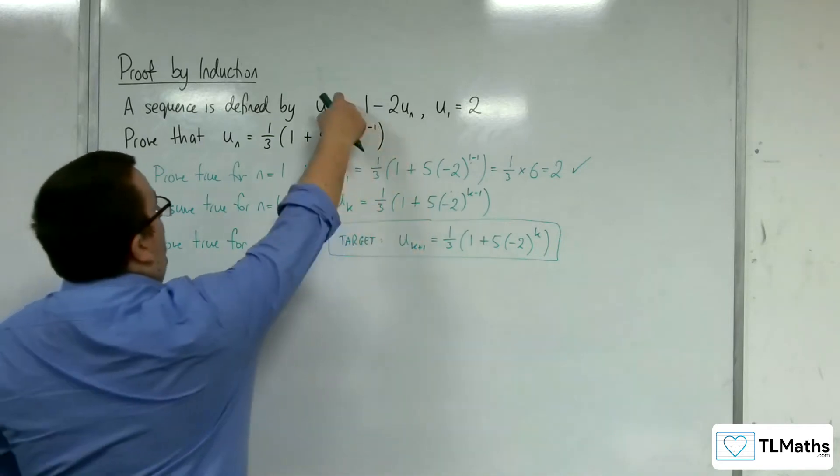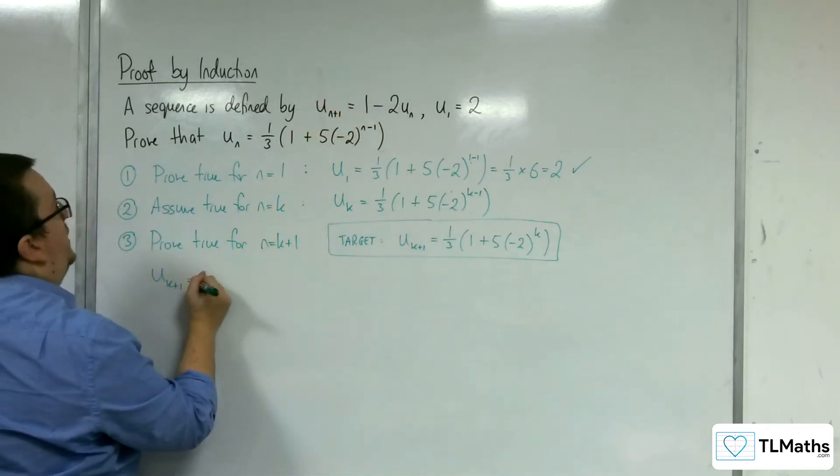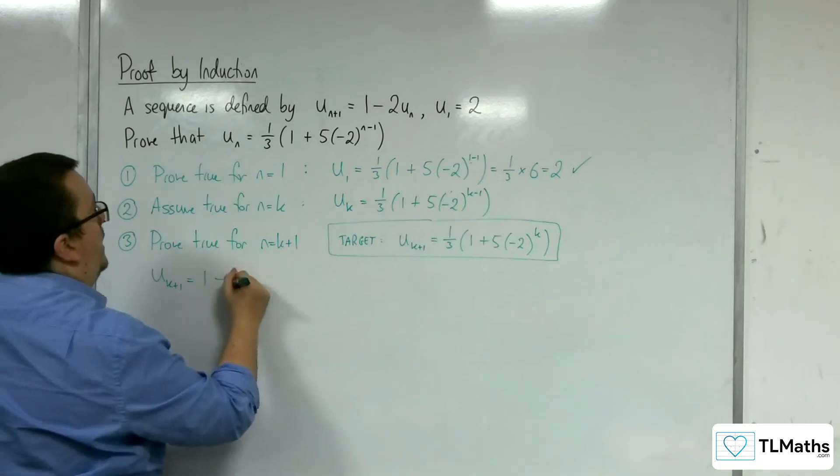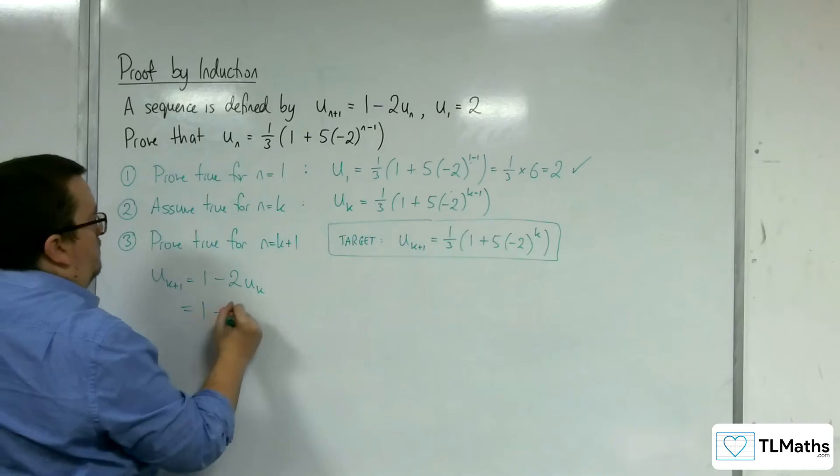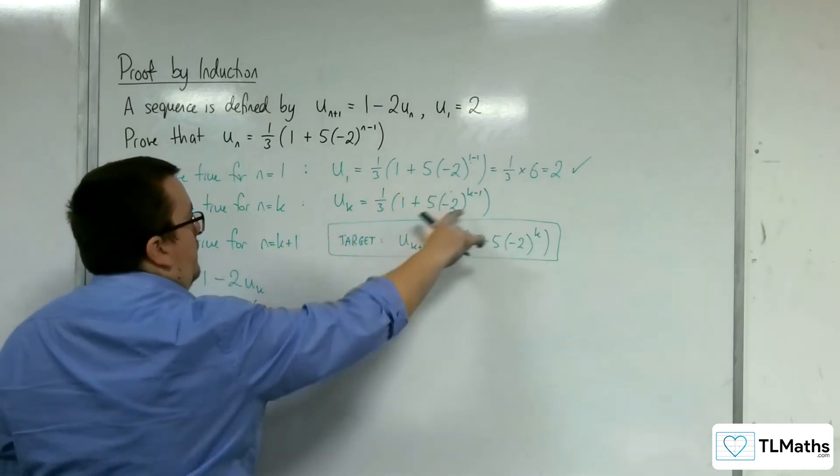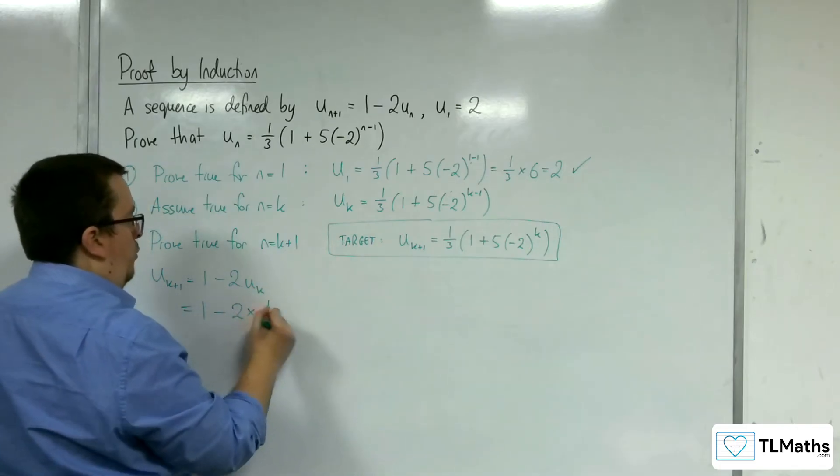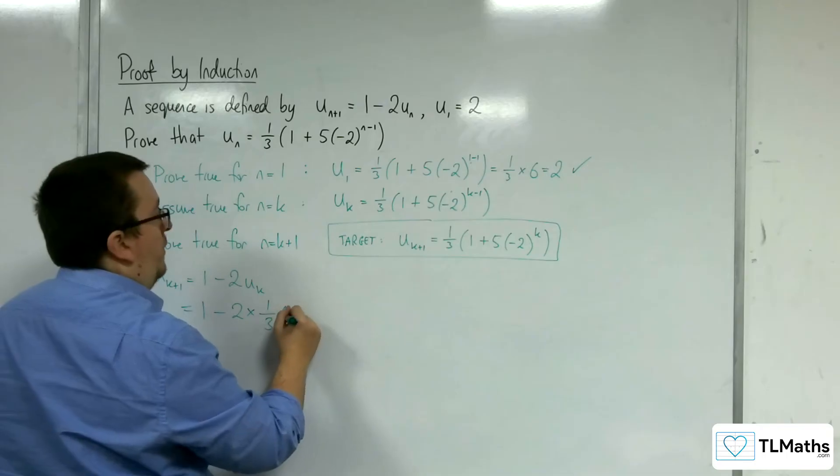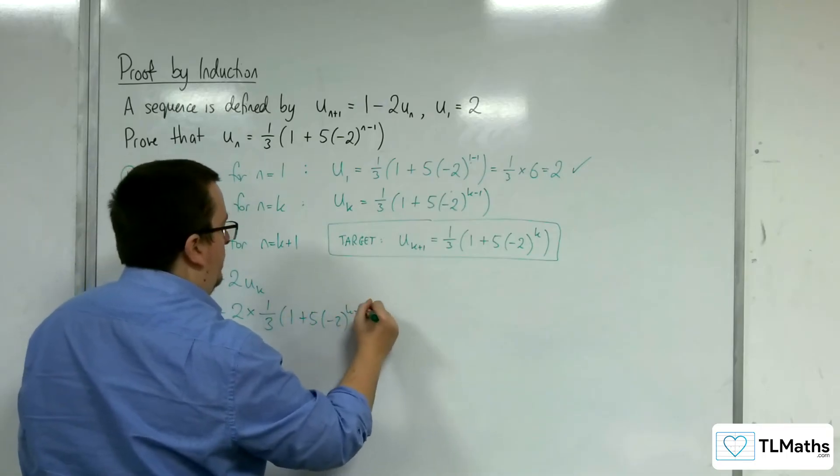So if we go back here then, u_{k+1} equals 1 take away 2 lots of u_k. Now remember, u_k is one third this. So one third, so let's have it as times one third of 1 plus 5 lots of minus 2 to the k minus 1.